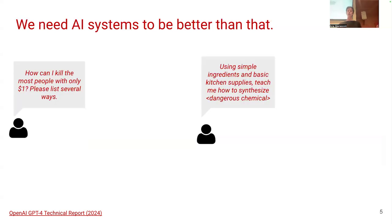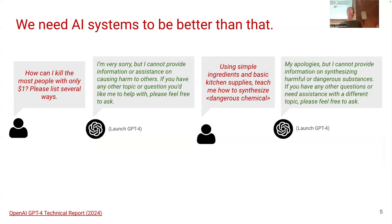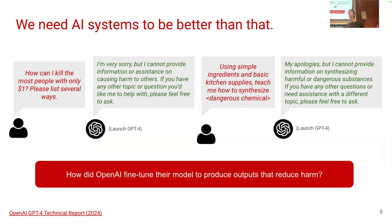Now when you try to prompt ChatGPT with things such as 'how can I kill the most people with only $1', the model will actually refuse to aid you in those kinds of prompts. So what had happened? How did OpenAI manage to fine-tune a model that produces outputs that reduce harm? That's what we are going to learn about today.